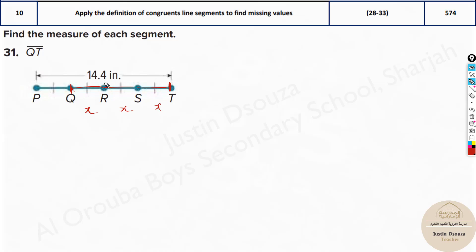This is X, X and X. But to find X you need to add all four because that's the total length right. So 14.4 will be equal to 4X. X will be just 14.4 divided by 4.